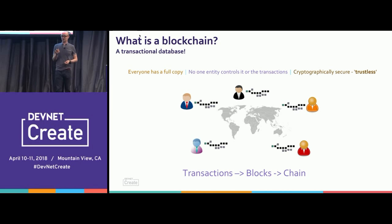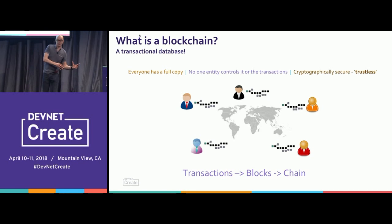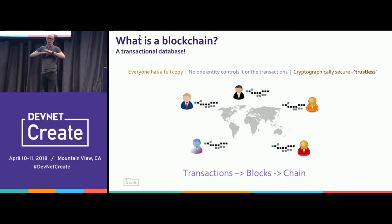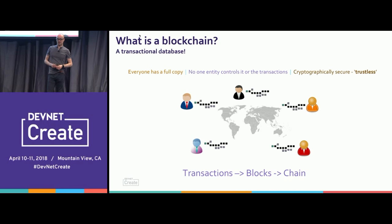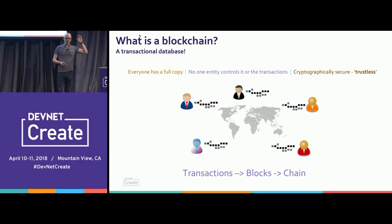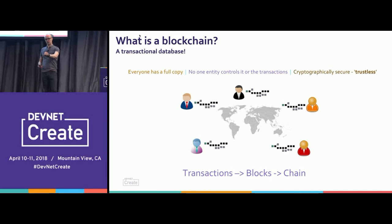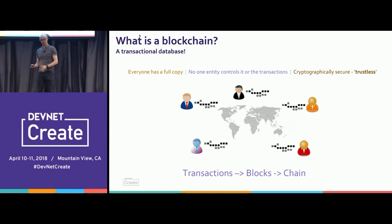In Cisco, when you say trustless network, people freak out and go, oh my God, can't have that. But in blockchain terms, that's a really good thing. To have a trustless network where I can transact on it, not trust any of you guys at all, but know my transactions are valid, is a really powerful tool. We have transactions that are rolled up into blocks, and those blocks are chained together. Block, chain. Amazing.